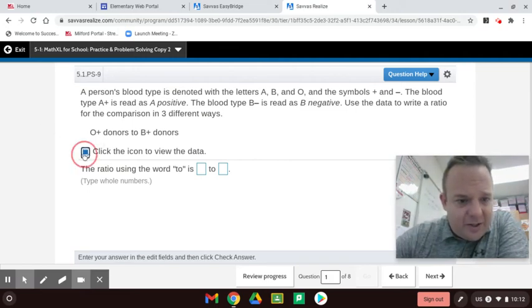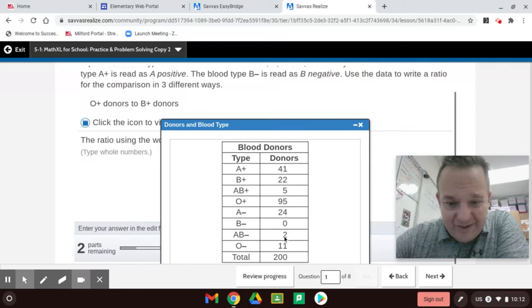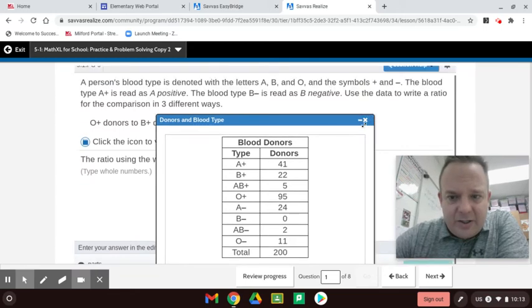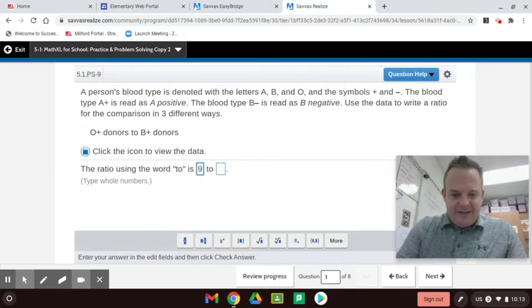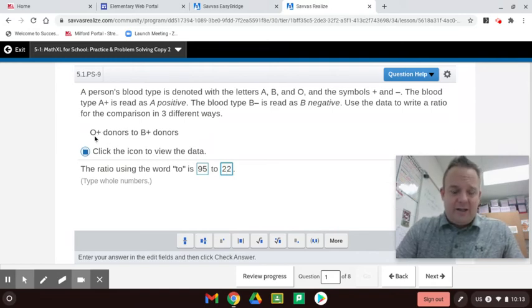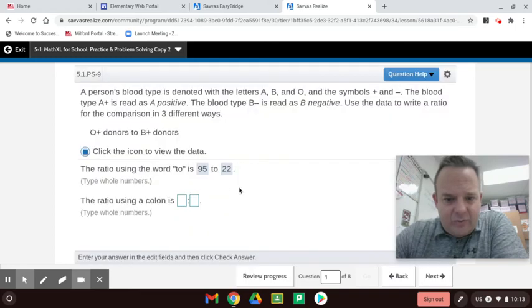So A positive and B positive. So what I'm doing, I'm looking here, finding A positive, which in my case is 95. I know it's different for you, over 22. So I'm going to write that here. So the ratio is 95 to 22. Now, could you put 22 to 95? No, because they want A positive first. So that has to come first in the ratio. That's an important distinction for you. So that's one way to write it with the word to.